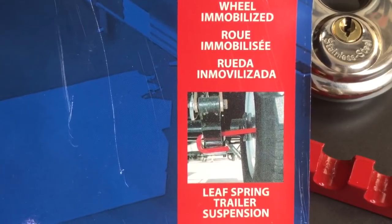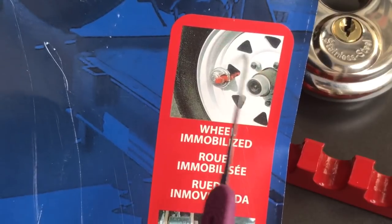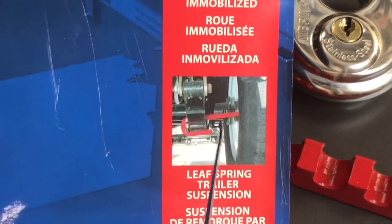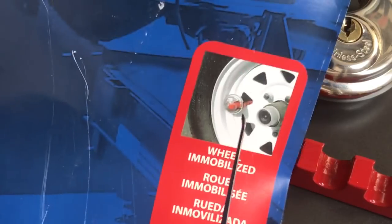It would also depend on the size of the holes in your particular trailer wheel because remember you would still have to thread this hooked portion of the bar through the wheel for that defeat to work.